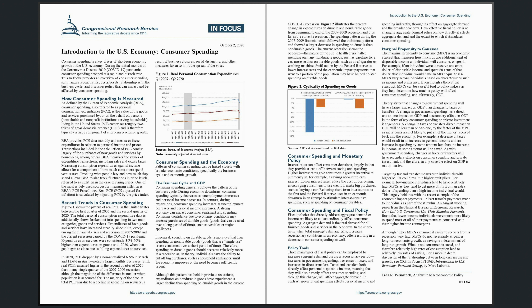In contrast, government spending affects personal income and spending indirectly, through its effect on aggregate demand and the broader economy. How effective fiscal policy is at changing aggregate demand relies on how directly it affects aggregate demand and the extent to which it stimulates consumer spending. Marginal Propensity to Consume. The marginal propensity to consume (MPC) is an economic concept that measures how much of one additional unit of disposable income an individual will consume, or spend. For example, if an individual were to receive one extra dollar of disposable income and spent 60 cents of that dollar, that individual would have an MPC equal to 0.6.